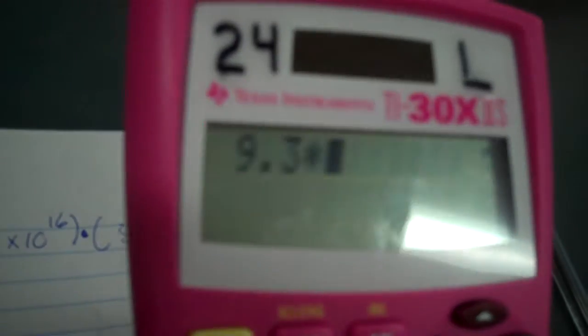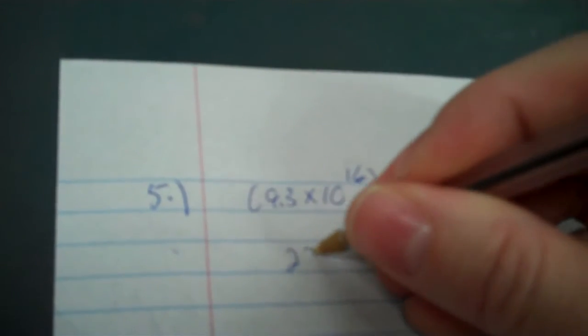Okay, number 5. Scientific notation. 9.3 times 10 to the power of 16 times 3 times 10 to the negative seventh. So, we times the 9 point, multiplication is commutative. I can do it in any order I want. It would make sense to do 9.3 times 3, and then take 10 to the 16th times 10 to the negative seventh. Okay, so 9.3 times 3 is 27.9. So, I can write that down.